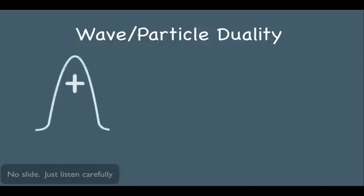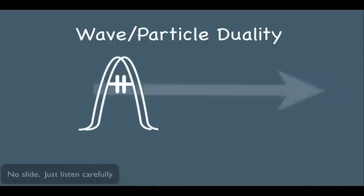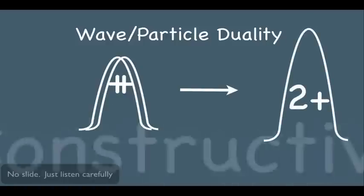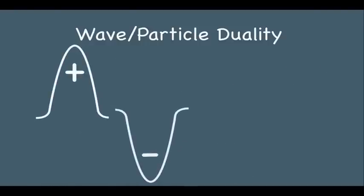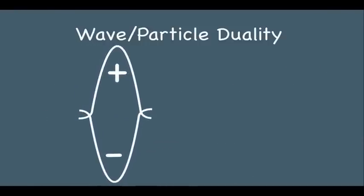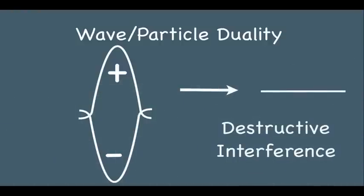If you have two waves and they meet up at the same time and place, that is called constructive interference, which means you get a wave that's two times as big — the amplitudes are additive. But this is not the only way that two waves can overlap. You can also have a wave pointing up and one pointing down, and when they overlap you get zero wave displacement, or a flat line. This is called destructive interference.